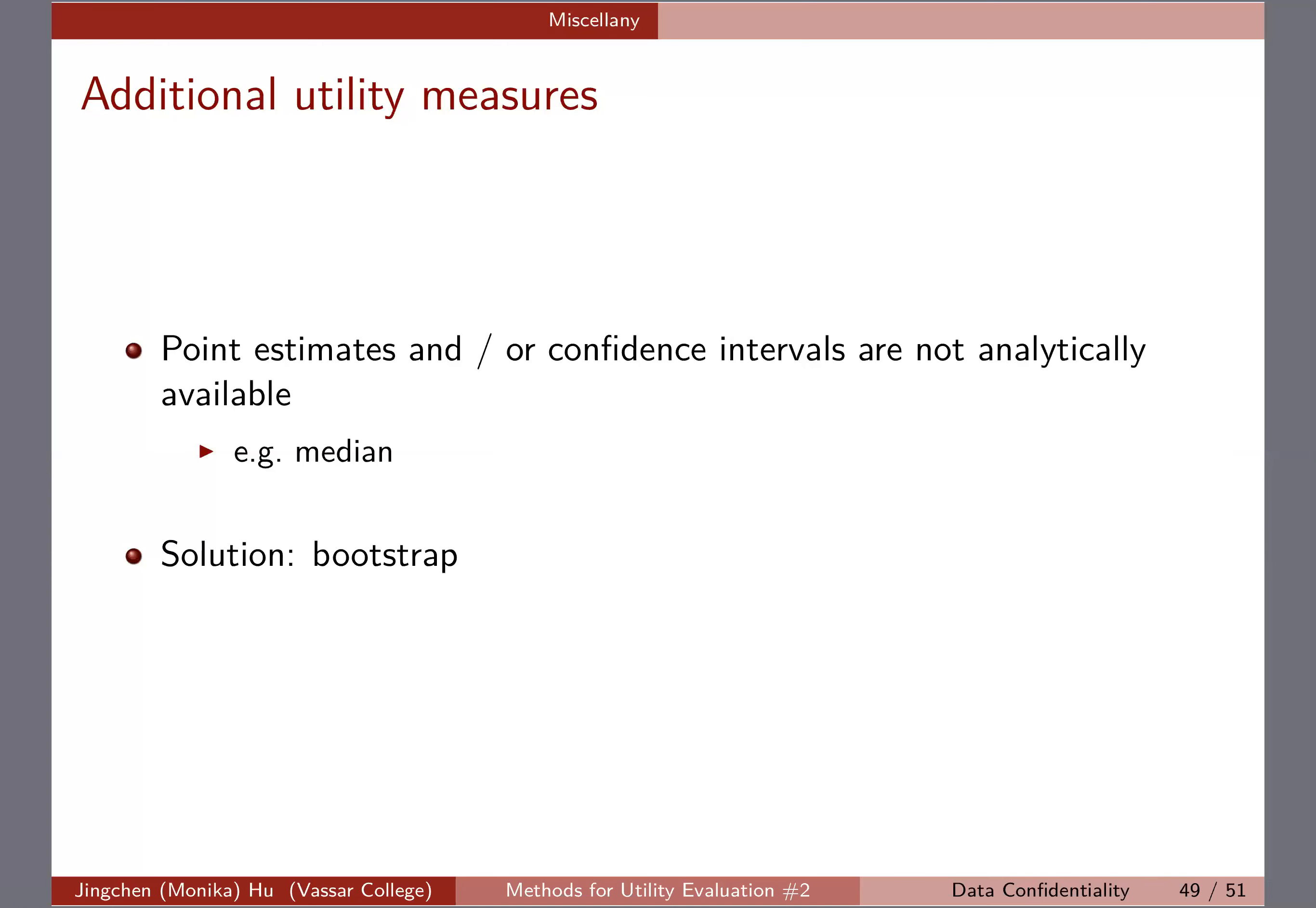For median, we unfortunately do not have an analytic solution for its variance. What you do is resample based on the sample that you have for a large number of times—say a thousand times or ten thousand times—and get the variance estimates. Bootstrap is a very commonly used technique when you're working with a quantity that is not analytically available for either point estimate or variance estimate. This could be something useful in your toolbox for the future.